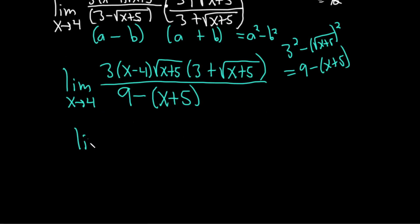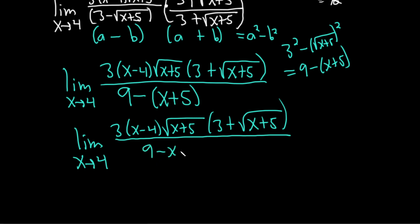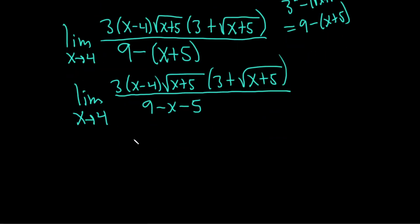So this is the limit as x approaches 4 of, again, I'm just going to leave the numerator untouched. X minus 4, square root of x plus 5, and then we have 3 plus square root of x plus 5. Just writing down the top piece one more time. And then on the bottom, we're going to perform the subtraction. We have 9 minus x, and then minus 5, minus 5.